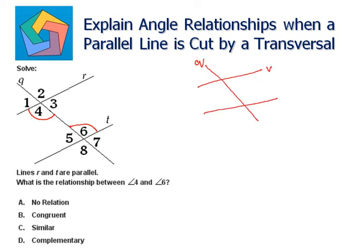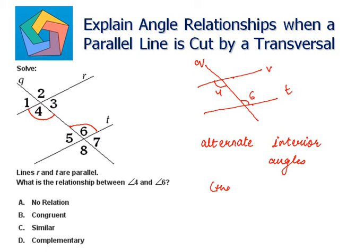When angles are lying on the opposite sides of the transversal, they are known as alternate interior angles, and they are always congruent. So congruent is our answer option.